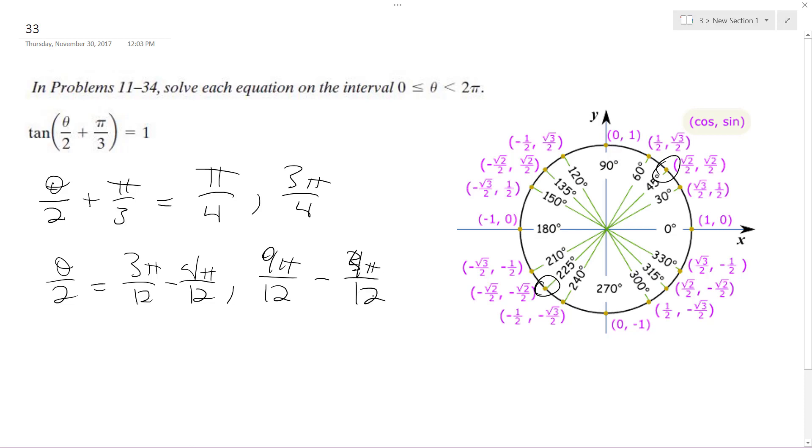4 pi over 12. I'll get there someday, I promise. Alright, so this ends up being negative pi over 12, and this ends up being 5 pi over 12.